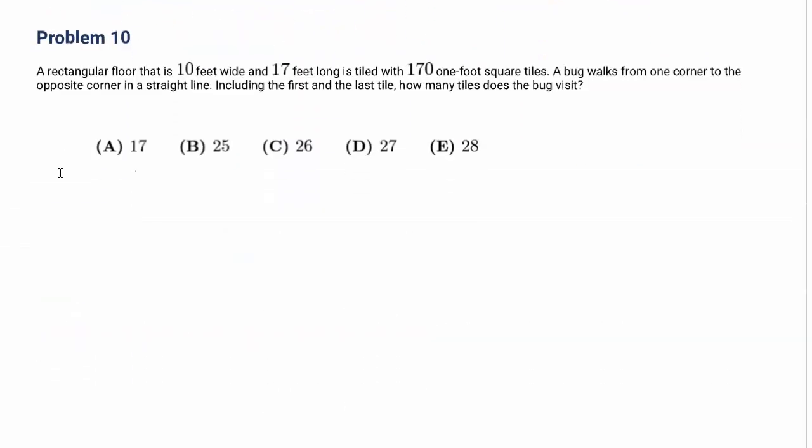Now let's go to number 10. A rectangular floor that is 10 feet wide and 17 feet long with 1 foot square tiles. A bug walks from one corner to the opposite corner in a straight line, including the first and last tile. How many tiles does the bug visit?